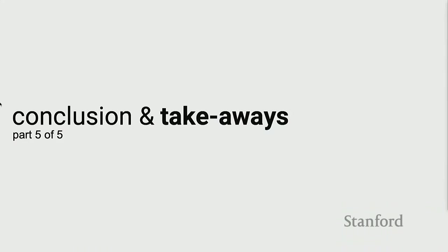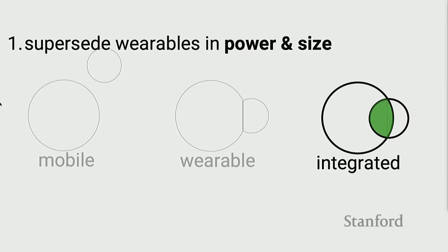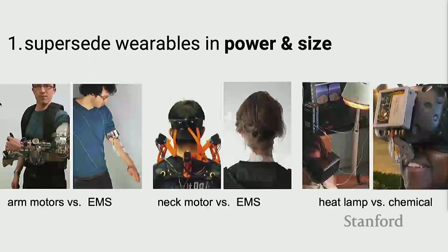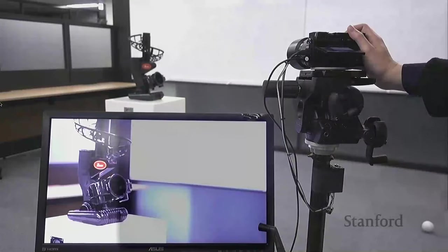We're getting close to the end. Some takeaway messages about integration: From a technical perspective, it gives us new ways to think. Battery people are very stuck right now — this approach may improve power efficiency, since the type of power we're optimizing for is totally different. It's also an improvement in size — all the devices I've shown are so much smaller than their mechanical counterparts. The second part is endowing people with new physical abilities — computers already cognitively enhance us, and now we're extending into tacit, physical knowledge.